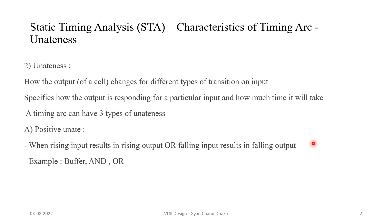What is uniqueness? Uniqueness actually defines how the output of a cell changes for a different type of transitions on the input. In simple words, whenever there is a rising transition or a falling transition happening at the input of a cell, how that output is going to change — this relationship is basically called uniqueness. There are three types of uniqueness: positive uniqueness, negative uniqueness, and non-unate.